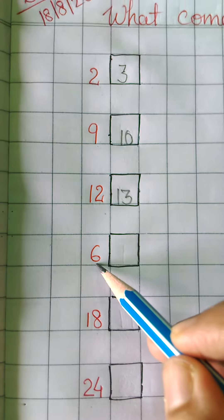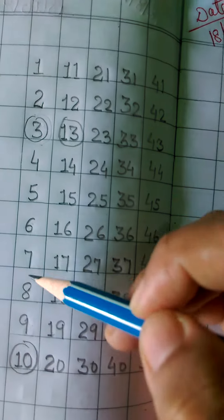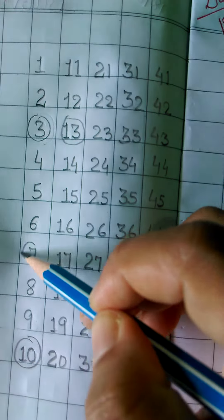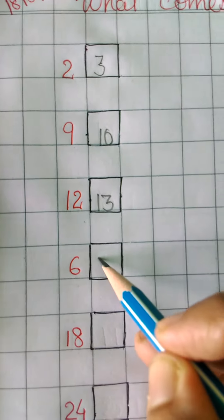Next is 6. What comes after 6? Here you can see after 6 which number comes? 7. What comes after 6 is 7.